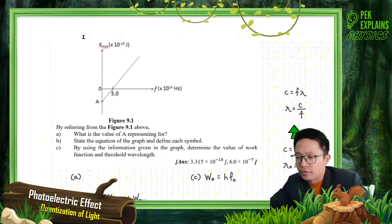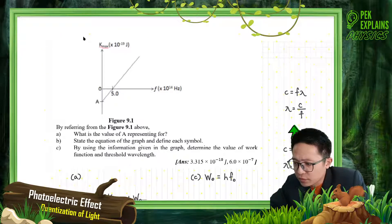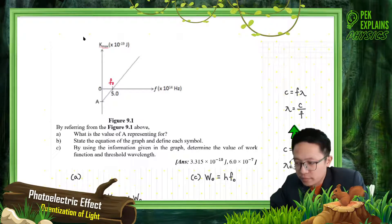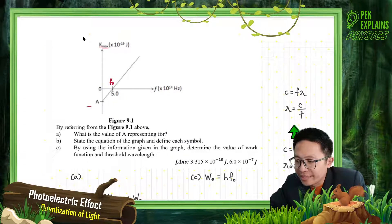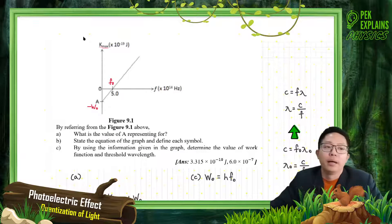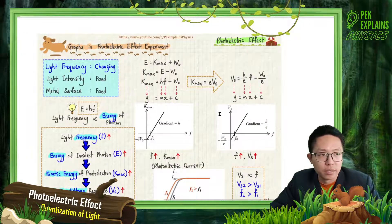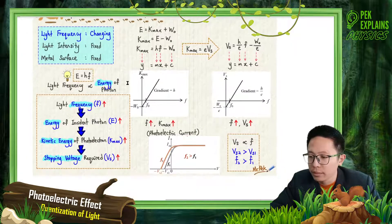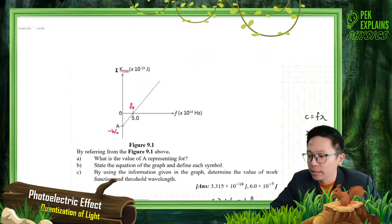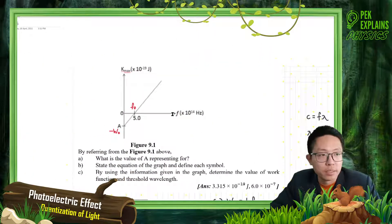If you remember, this value of 5 — the intercept at the x-axis — it is F0. And this one, A is actually negative W0. Negative W0. So remember this, the part we learn about this — about the Kmax against frequency graph.